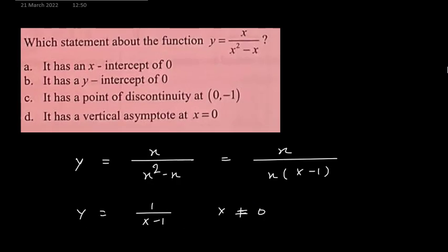The last question: which statement about the function y equal to x upon x square minus x. Here I can take x common from the denominator. This x can cancel and x equals 0 will give me a point of discontinuity. So at x equal to 0, the function is discontinuous and I am getting function as y equal to 1 upon x minus 1.